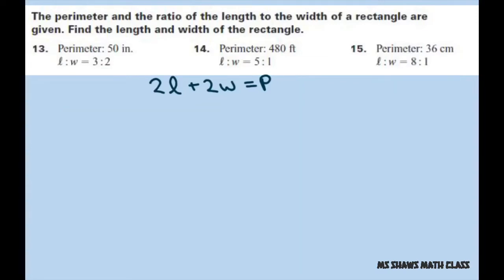Let's do problem 14. The length is going to be 5x and the width is 1x, or just x. So let's fill it in. We have 2 times 5x plus 2 times x equals 480 feet.